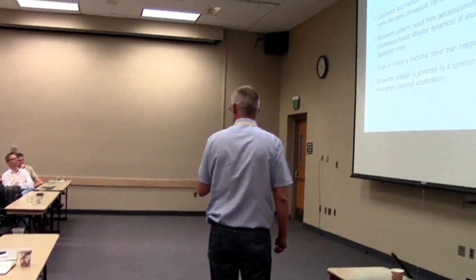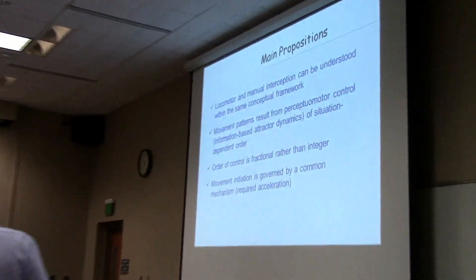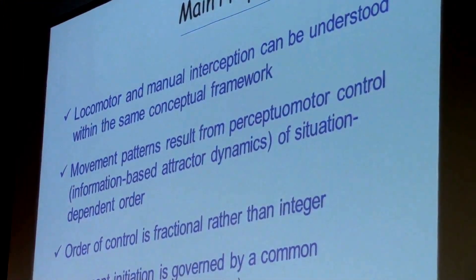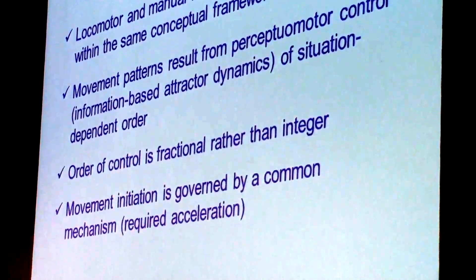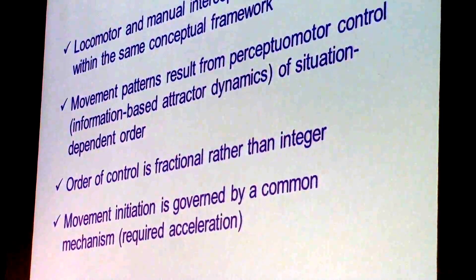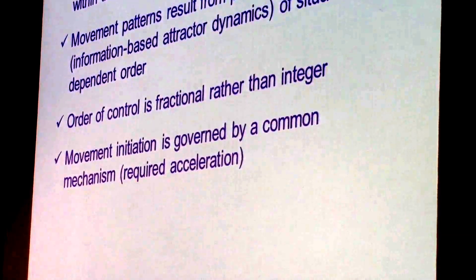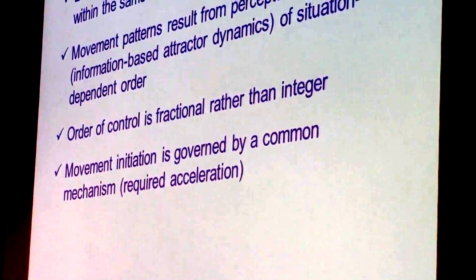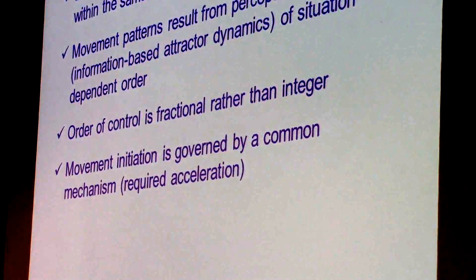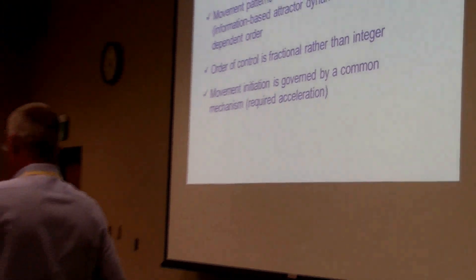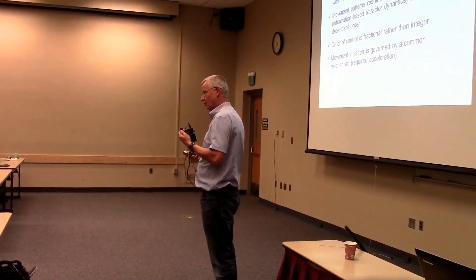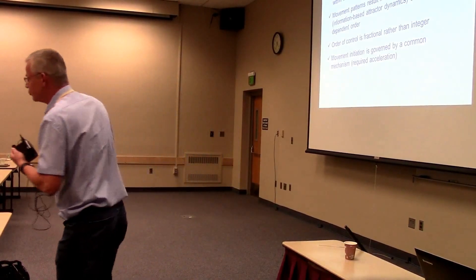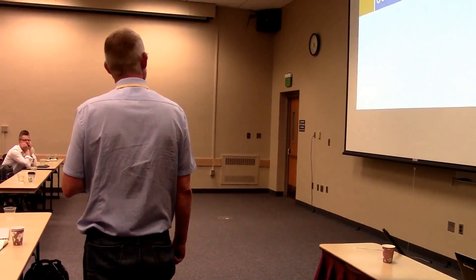What are we saying? Interception, whether it be locomotor or manual, can be understood within the same conceptual framework. These two literatures can be brought together and be understood together. And it's interesting to use the effects observed in one to see whether you find it in the other, which we did for the angle of approach effect. Movement patterns result from a type of perceptual motor control and information-based attractor dynamics that is situation-dependent. The order is not fixed. The order depends on what happens. The order is fractional, rather than integer. And you can quite accurately capture movement initiation in both types of tasks by referring to this common mechanism, which is not a perceptual threshold, but an action threshold. When does it tell you that you should now accelerate by so much? That's when you start moving. Is there a conclusion? I think Bill is the conclusion. Thank you.